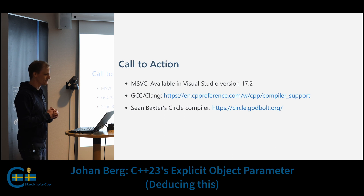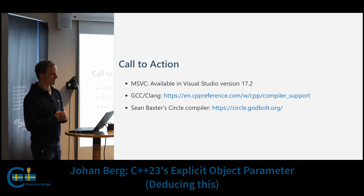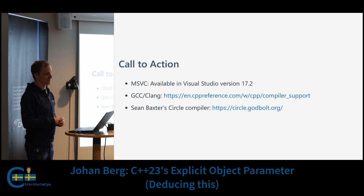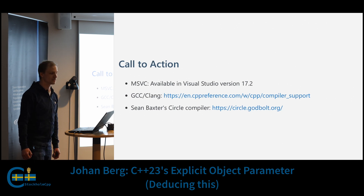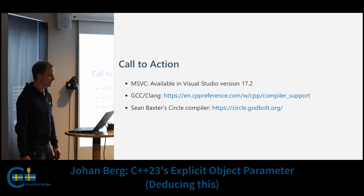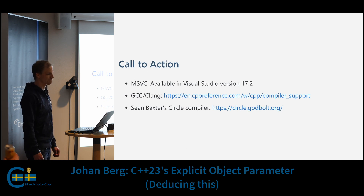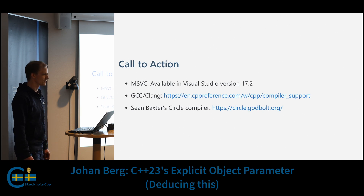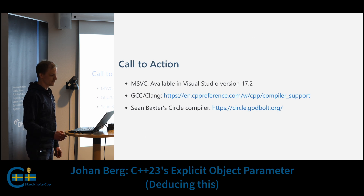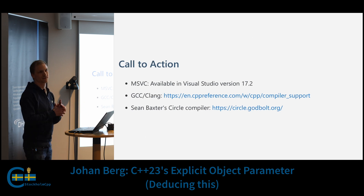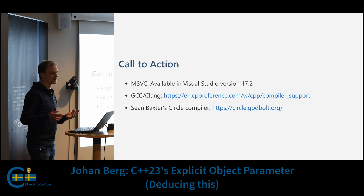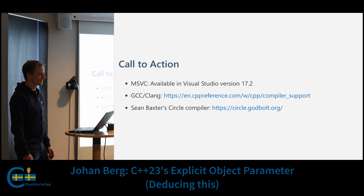So what do I want you to do? I want you to try this feature out and see what you think. If you're on Windows it's available in Visual Studio 17.2. If you're on GCC or Clang it's not supported yet, so keep an eye on the compiler support page on cppreference. While you're waiting you can try it out in Sean Baxter's Circle compiler. Try this feature out, have some fun, and think about places in your own code where you could use an explicit object parameter. Thank you.